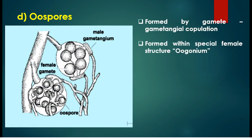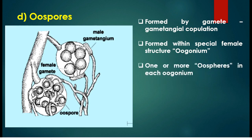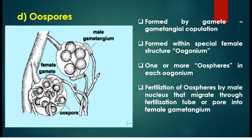In oospore formation, the female gametangium is called oogonium and it contains well-differentiated female gametes called oospheres. The oogonium is a large ball-like structure; within one oogonium one or more oospheres can be seen. The male structure is not differentiated into gametes but comes in contact with the oogonium.